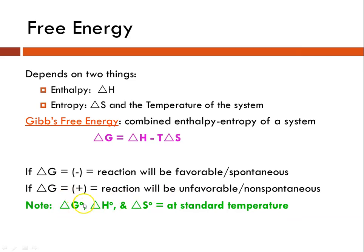Note, the delta G naught is delta G of formation, delta H naught would be delta H of formation, delta S naught, delta S of formation at standard temperature. So whenever you see those little superscript zeros, they're referring to standard temperature.